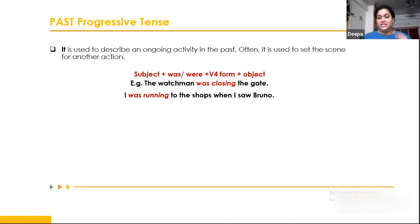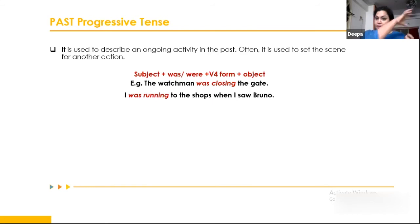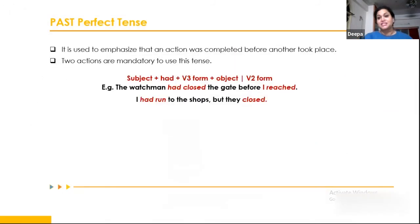Past progressive tense describes an action that was happening for a period of time in the past. The structure is: Subject + was/were + V4. For example: 'The watchman was closing the gate by 10 p.m. till last week.' 'I was running to the shops when I saw Bruno' — something else happened while the action was ongoing.